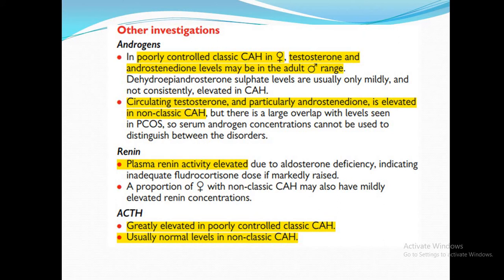Other investigations: in males with poorly controlled classical CAH, testosterone and androstenedione levels may be in the adult range due to adrenal production. In non-classical CAH, circulating testosterone and androstenedione are elevated. Renin levels are elevated due to aldosterone deficiency. ACTH is greatly elevated in poorly controlled classic CAH but normal in non-classical CAH — this is the key distinction between the two forms.